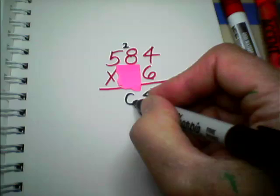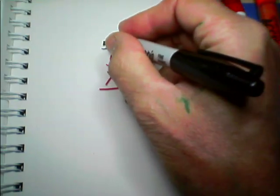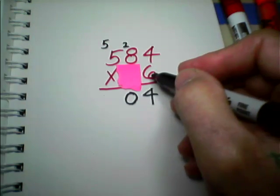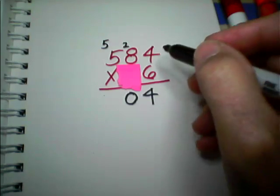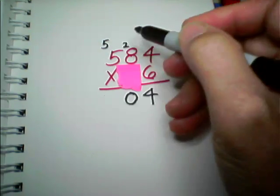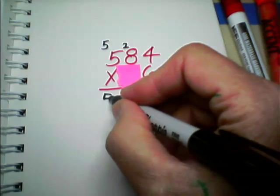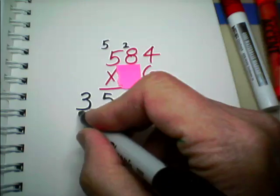So, we write the 0 from the 50 there. And we carry the 5 from the 50 up here. And we give it a rest. Let me look at our multiplier. 6 times 5. 6 times 5 is 30. 30 plus the 5 that's resting is 35. So, we write the 5 from 35 there. And we write the 3 from 35 next to it. There's our 35.